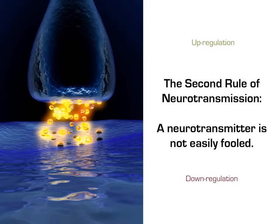The second rule of neurotransmission is: a neurotransmitter is not easily fooled. Anytime you give a drug to increase the amount of a neurotransmitter, the synapse will remove receptors for that neurotransmitter, effectively making itself less sensitive to that drug. This process is known as down-regulation. Conversely, if you try to decrease the amount of a neurotransmitter present, the synapse will try to make itself more sensitive by recruiting more receptors to the cell surface, known as up-regulation. These processes account for much of what is observed during drug tolerance and withdrawal.